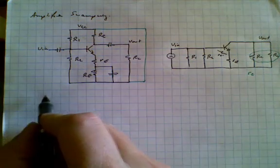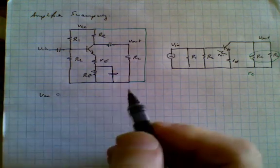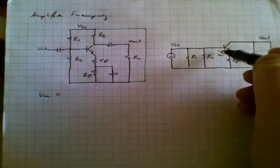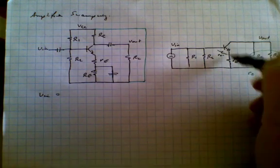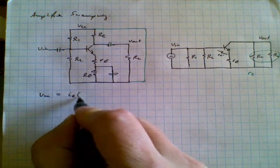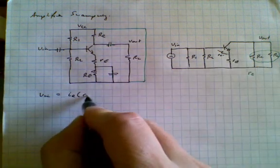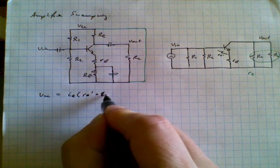And this is Vin and of course we have Re prime in the intrinsic base emitter path. So voltage in, AC voltage in, is equal to the current flowing through this pair of resistors, Re prime and Re, times the resistance. And of course that current is IE times Re prime plus Re.